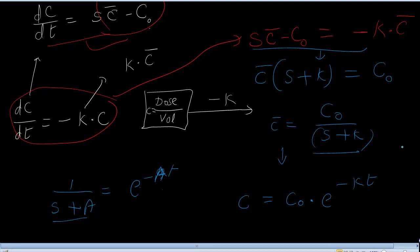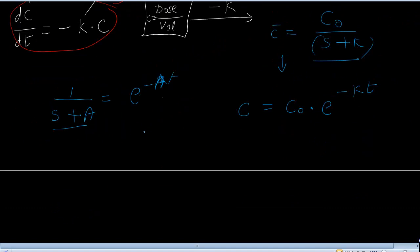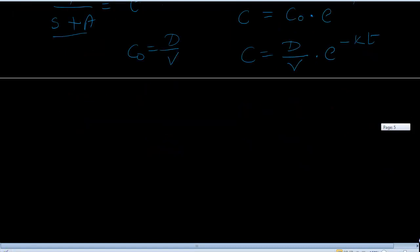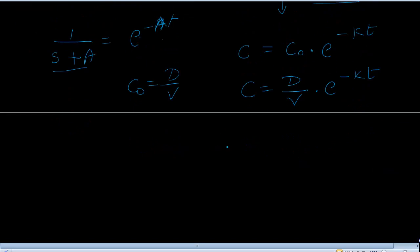C₀ is the concentration at time zero, which is dose divided by volume. So the final equation is: C = (Dose/V) · e^(−kt). We can also rewrite this as C = (Dose/V) · e^(−(CL/V)·t), since k equals clearance divided by volume. Alright, that is it.